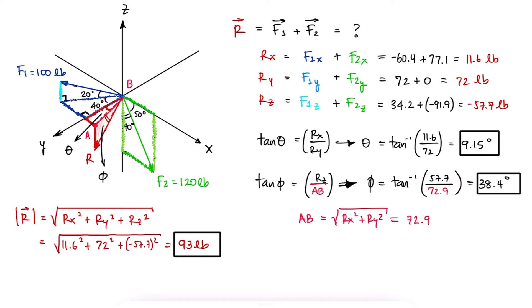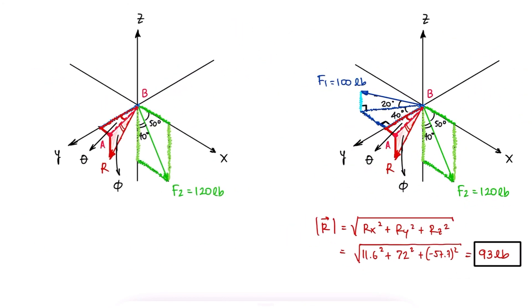These three values would fully describe vector R, but it is also common in textbooks to find the coordinate directional angles, which are the angles that the vector forms between it and the three Cartesian axes.